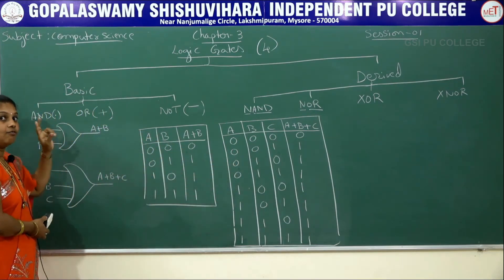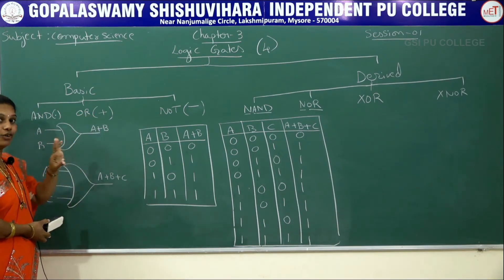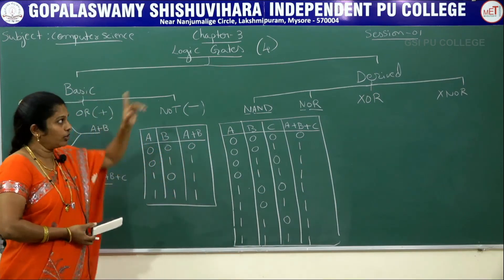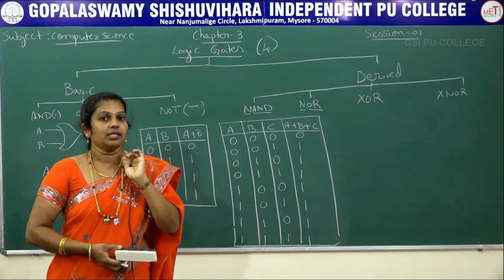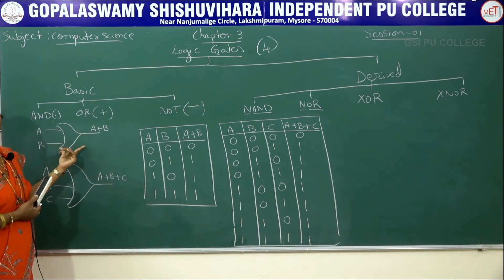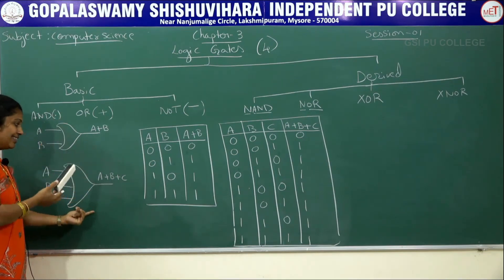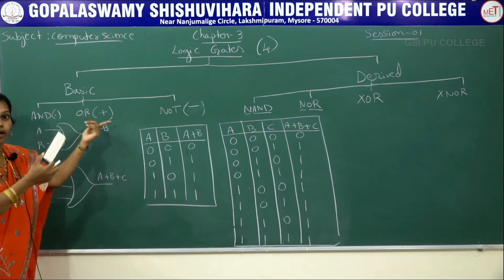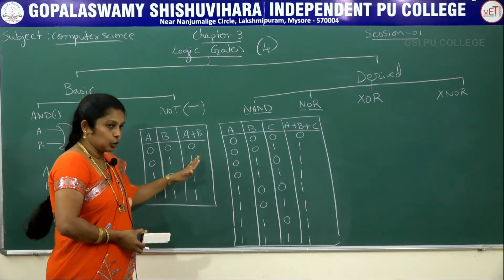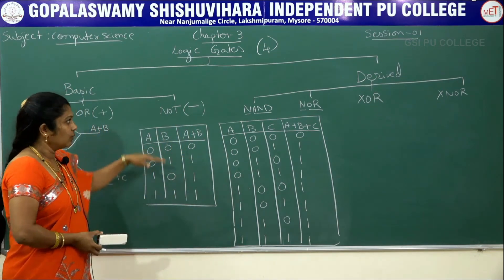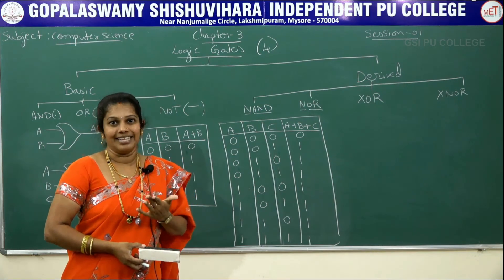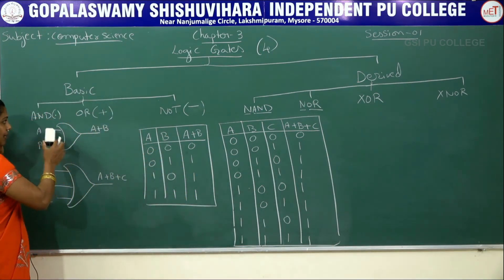This is the symbol for two variables in OR gate, and this is the symbol for three variables in OR gate. This is the truth table for two variables and this is the truth table for three variables. In the exam — the total weightage is four marks, one mark question and three marks question — they may ask to write the symbol for OR gate for two or three variables, or write the truth table for AND gate or OR gate.